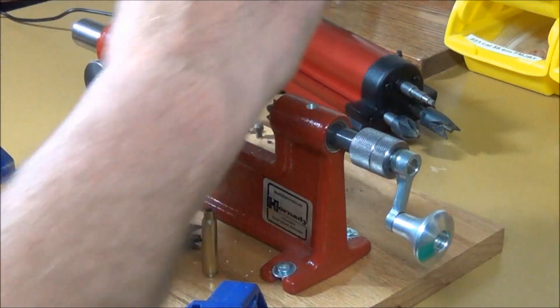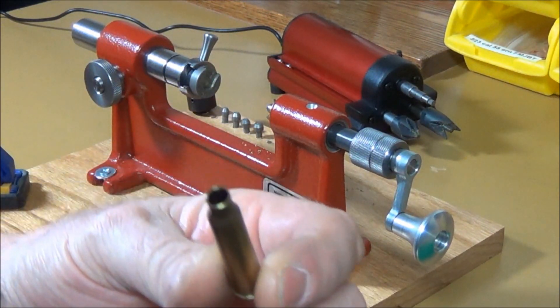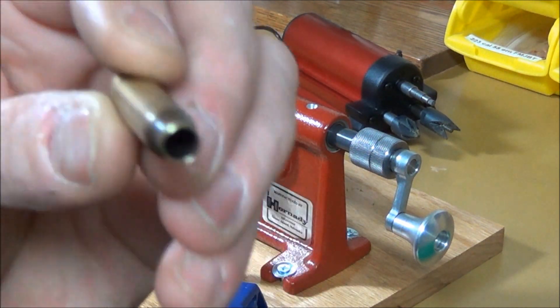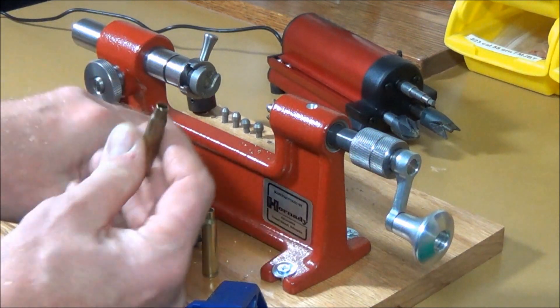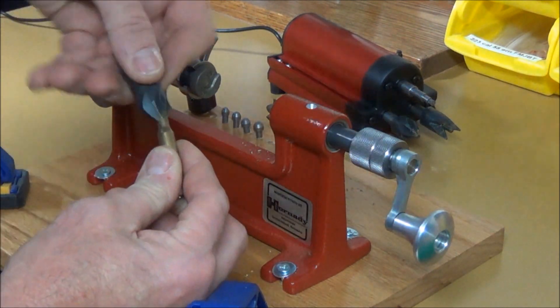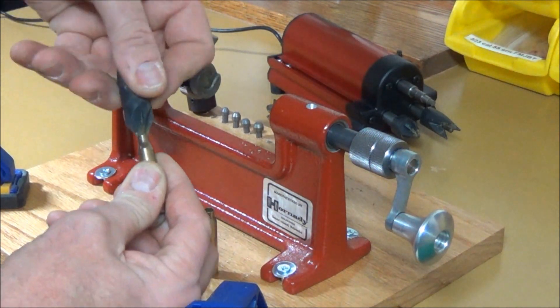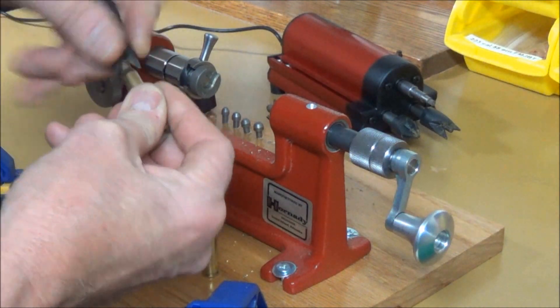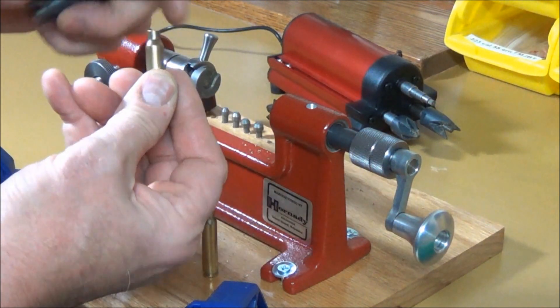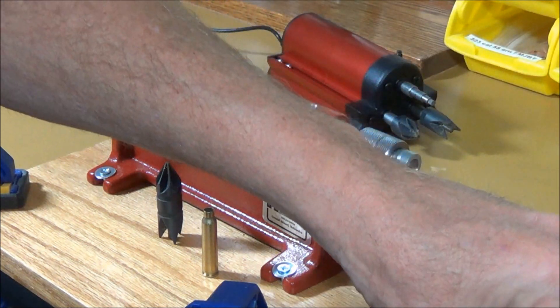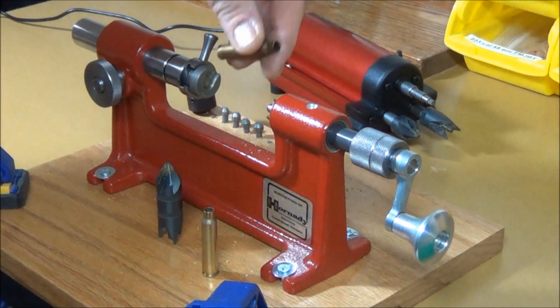Sometimes they like to stick. And you can probably see some of the burrs on there. We want to get rid of the burrs as well, so we can take a hand tool. Give it a few twists on the inside, get rid of the inside burrs. Do it on the outside like that. And we have a nice clean case that's been sized and deburred.